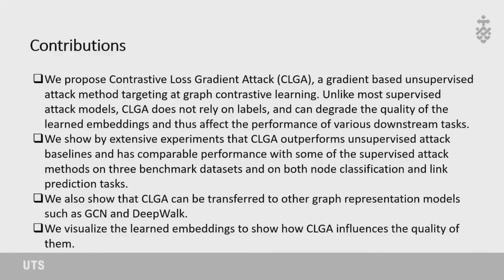We fill this gap and propose a novel unsupervised attack for graph contrastive learning. Our contributions are: first, we propose the Contrastive Loss Gradient Attack (CLGA), a gradient-based unsupervised attack targeting graph contrastive learning that does not rely on labels. Second, extensive experiments show CLGA outperforms unsupervised attack baselines and has comparable performance with supervised methods on three benchmark datasets for node classification and link prediction. Third, CLGA can be transferred to other graph representation models such as GCN and DeepWalk. Finally, we visualize the learned embeddings to show how CLGA degrades their quality.